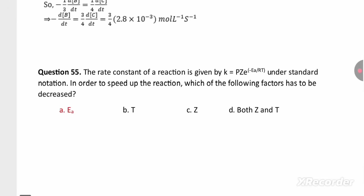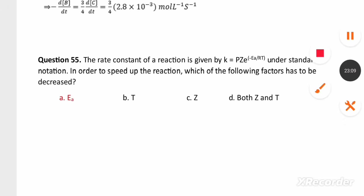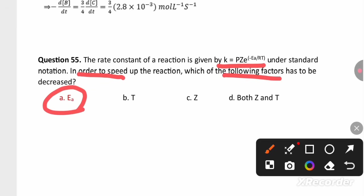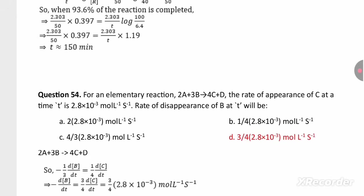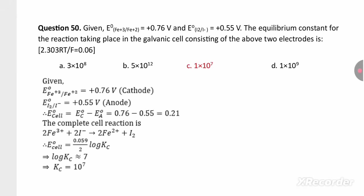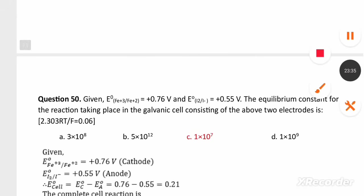The rate constant of a reaction is given by K = PZe^(−Ea/RT) (Arrhenius equation). In order to speed up the reaction, the activation energy Ea needs to be decreased. These are some of the question answers from the Karnataka CET and NEET chemistry syllabus. I hope it is going to be very helpful for your revision. Thank you, students.